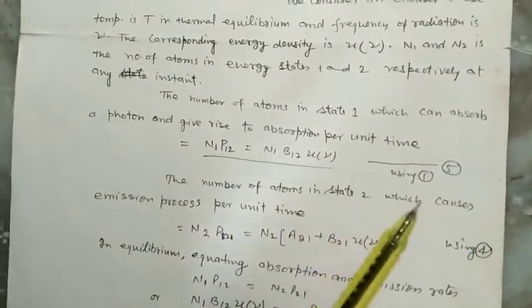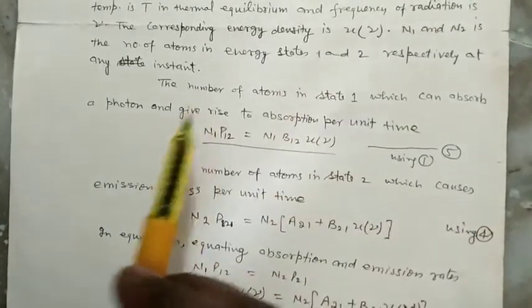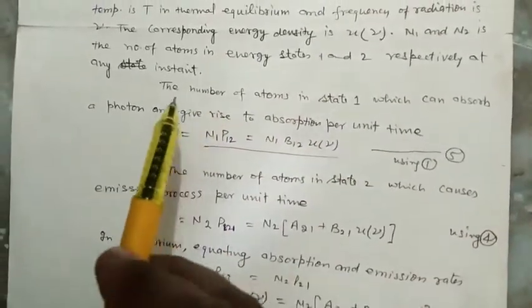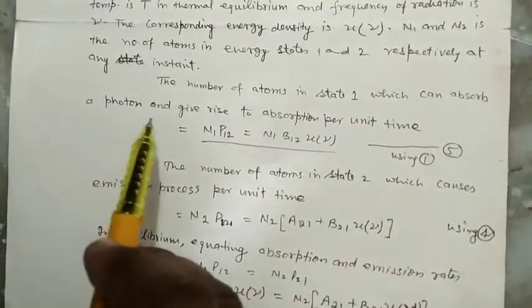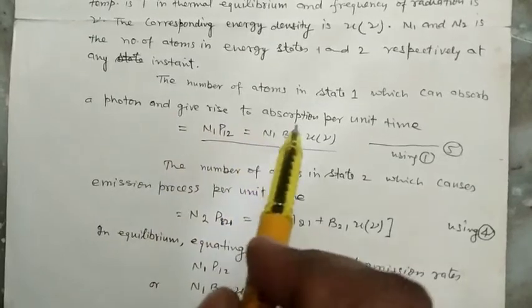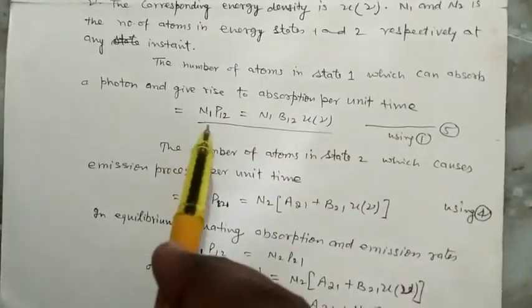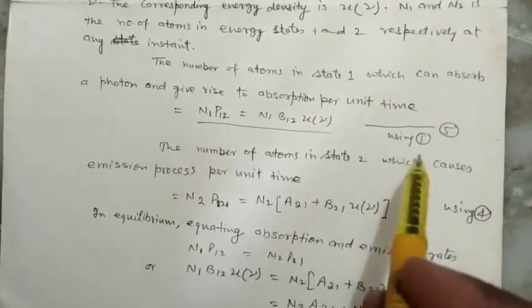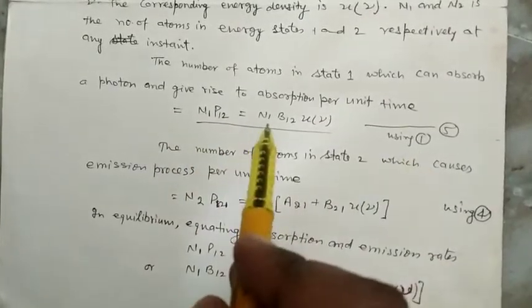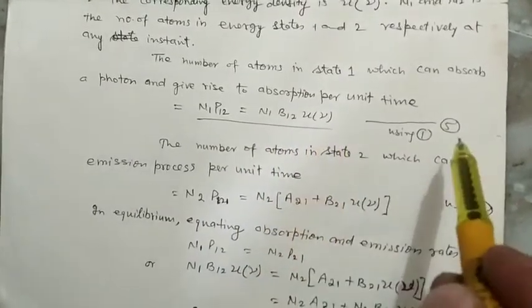The number of atoms in state 1 which can absorb a photon and give rise to absorption per unit time is equal to N1·P12. The value of P12 from equation number 1 is equal to N1·B12·U(ν). This is equation number 5.